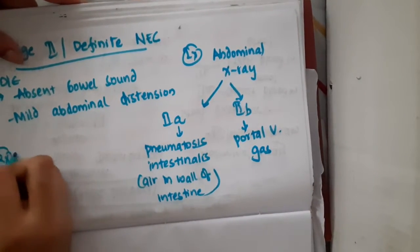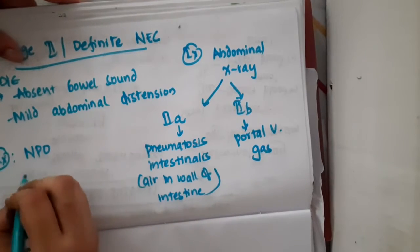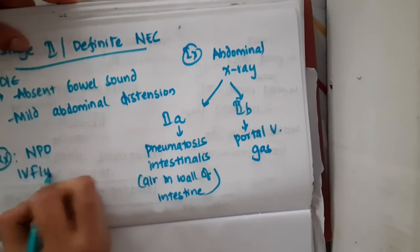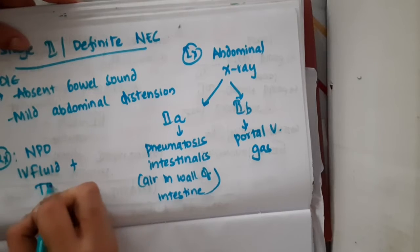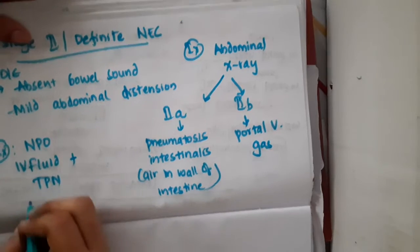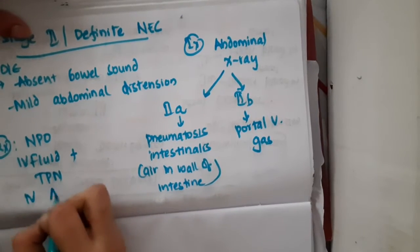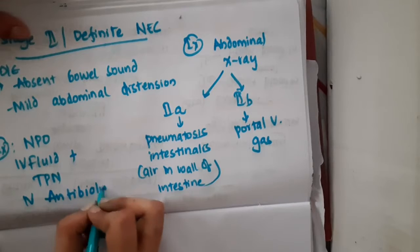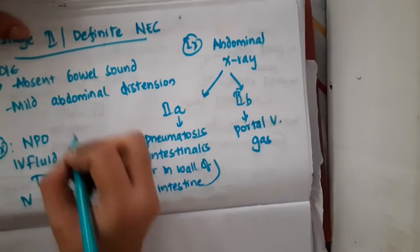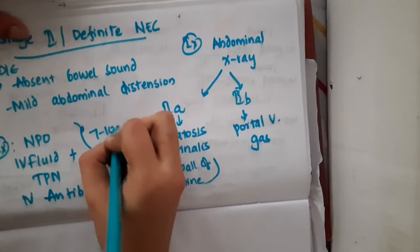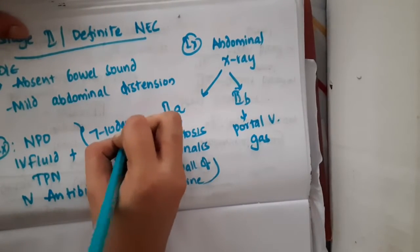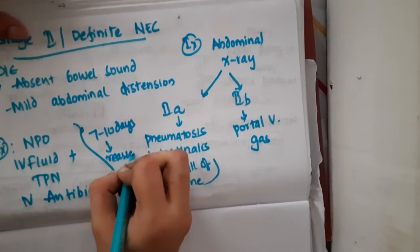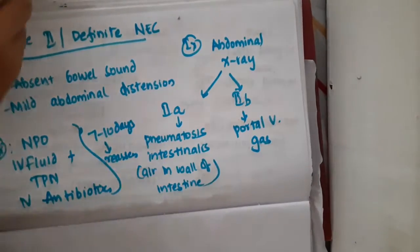Treatment for stage 2 is nil per oral, IV fluids with total parenteral nutrition, and IV antibiotics, all given for 7 to 10 days, followed by reassessment.